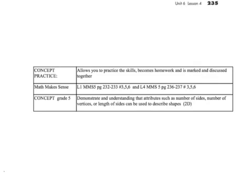So we have now discussed a number of different attributes of two-dimensional shapes. You are going to use these attributes to describe shapes: the number of sides, the number of vertices, the length of the sides, whether or not they're parallel, perpendicular, intersecting, and so on. Remember to use words such as horizontal and vertical to describe your shapes as well. You are working on pages 232–233, just questions 3, 5, and 6, and pages 236–237, again questions 3, 5, and 6. If you have any questions along the way, please ask.